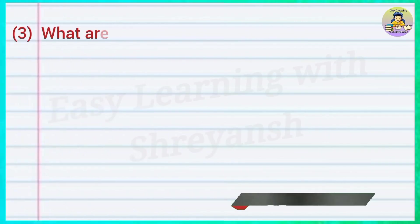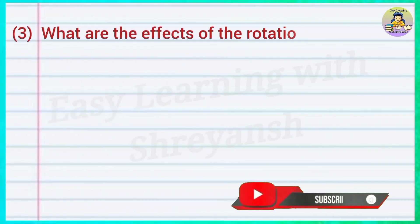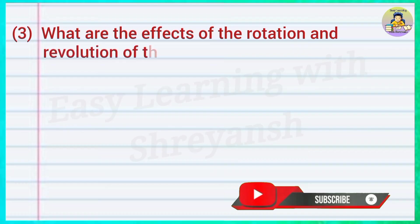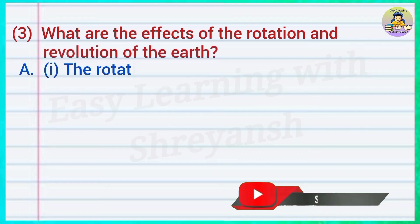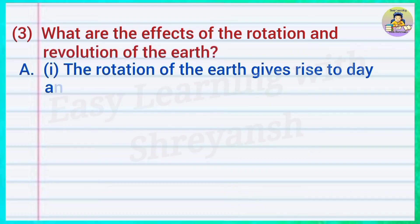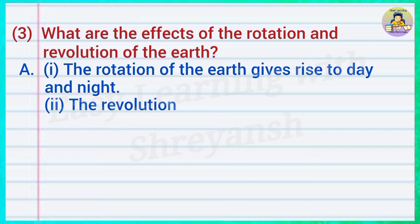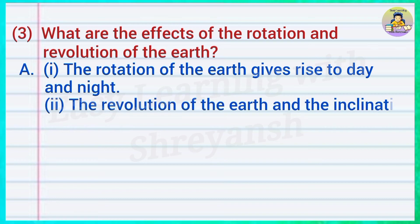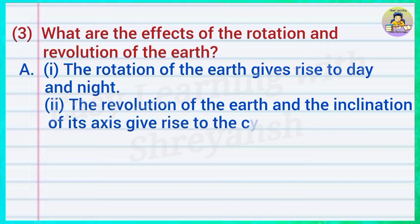Three — what are the effects of the rotation and the revolution of the earth? Answer: The rotation of the earth gives rise to day and night. The revolution of the earth and the inclination of its axis give rise to the cycle of seasons.